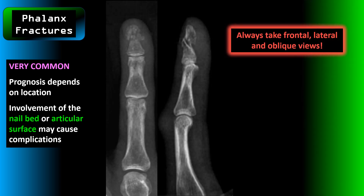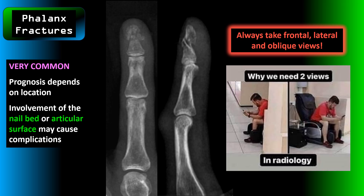When evaluating for fractures of the hand or fingers, always take frontal, lateral, and oblique views. You always need a minimum of two perpendicular views in radiology.